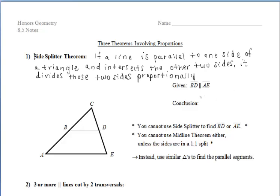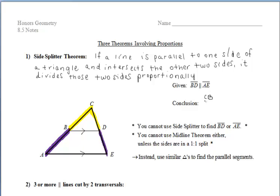Let's take a look at our diagram. We're given that line segment BD is parallel to line segment AE, and we want to determine what our conclusion is. We have line segment BD parallel to one side of the triangle, and it intersects the other two sides, which means it divides the sides proportionally. So we can say that the ratio of CB to AB is equal to the ratio of CD to DE — yellow to purple equals yellow to purple.